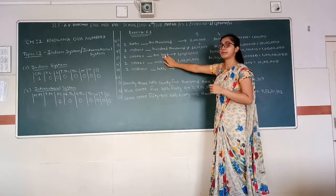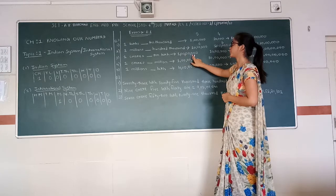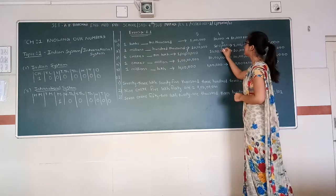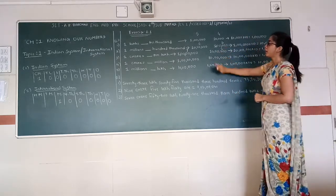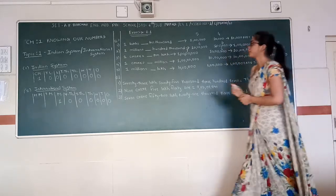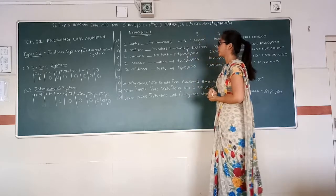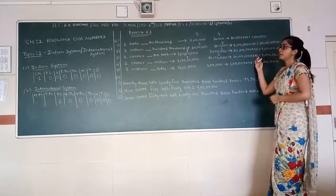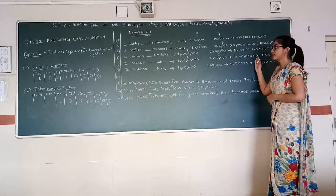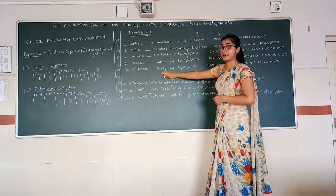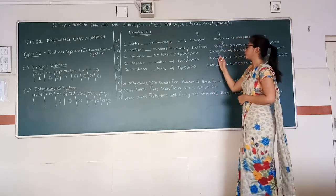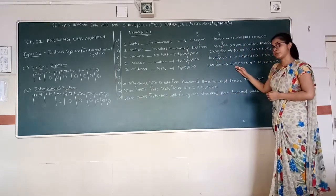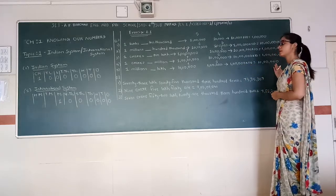One crore is equal to how many ten millions? In one crore we have seven zeros, and in ten million we have six zeros. So we will multiply ten million by ten, which will give us one crore. Also, one lakh multiplied by ten gives one million — in one million we have six zeros and in one lakh we have five zeros, so we multiply one lakh by ten to get one million.